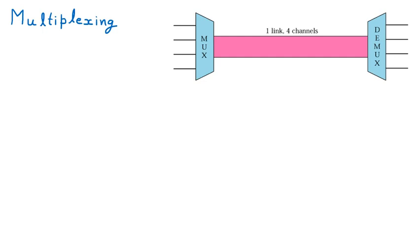Now we are discussing multiplexing. Multiplexing means whenever multiple devices are sending data, their data is merged together and sent through a single medium. We can say that multiplexing means combined transmission of several devices sent through a single medium.